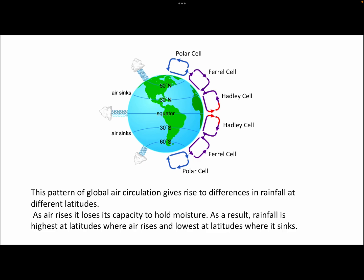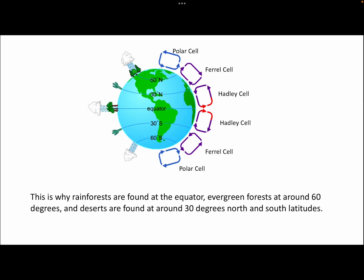This leads to bands of high and low pressure at various points across planet Earth. At the equator, we've got an area of low pressure. At the tropics, an area of high pressure. Then another area of low pressure, and at the very far north and south pole, another area of high pressure. This leads to bands of clouds and rain, and also areas of Earth where there are very dry conditions as a result of high pressure bands. This is why we've got rainforests at the equator where the sun's energy is concentrated and air is rising, leading to rainfall, whereas at the tropics, air is sinking, giving high pressure that leads to the distribution of deserts.